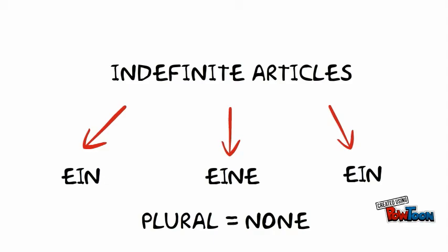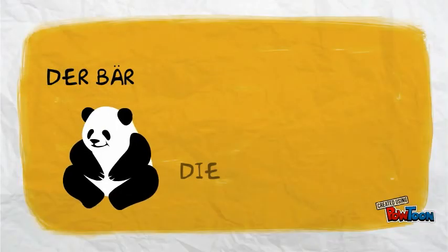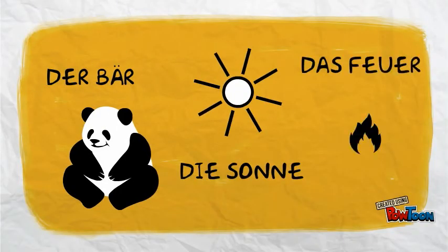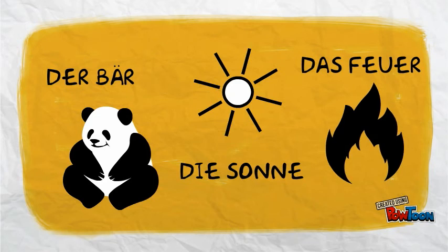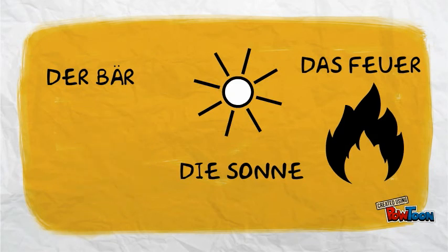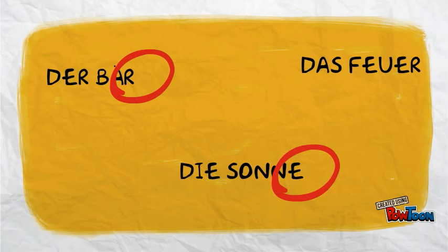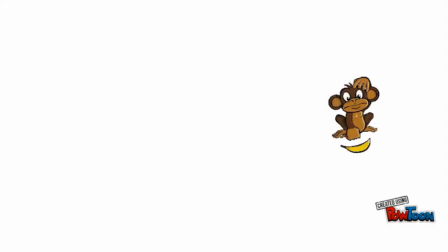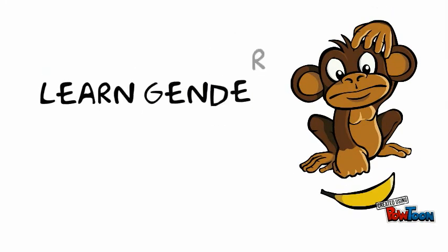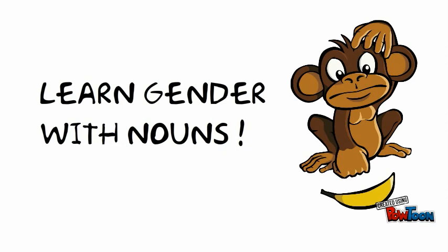So how will you know if a noun is masculine, feminine, or neuter? Let's go back to our examples: Der Behr, Die Sonne, Das Feuer. If a noun ends in E, chances are that it is feminine. If it ends in R, it could be masculine. But as you can see with Feuer here, this is not always the case. So the most important thing to remember is this: always learn the gender with the noun.